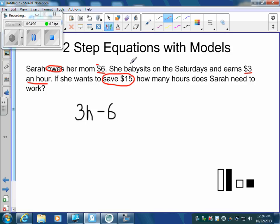And here it says she wants to save $15. So whatever we want to do, we want to equal $15. So now I've built my equation. I've got 3h minus 6 equals 15.